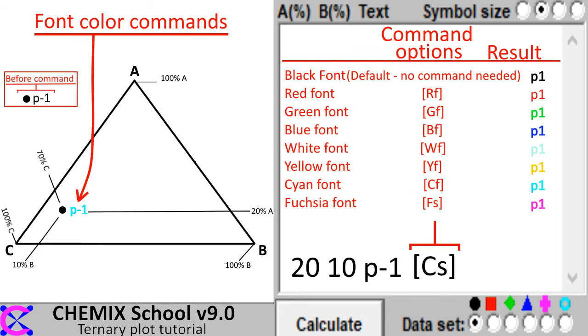To change the font color, enter a font color command enclosed in square brackets. The color options for fonts are the following: black, red, green, blue, white, yellow, cyan, and fuchsia.